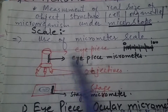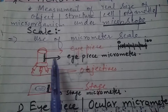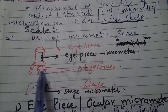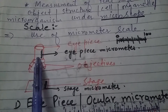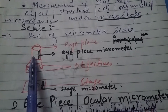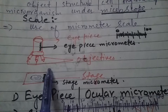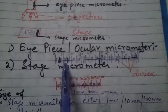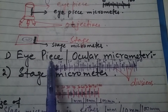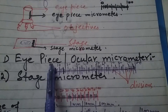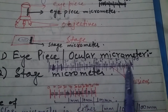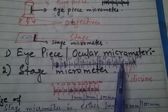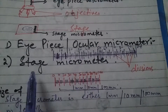Here we have shown the microscope parts: eyepiece, objective, and stage. The eyepiece has a lens, and the objective piece also has lenses. Inside the eyepiece, we have a transparent scale called the eyepiece micrometer. On the stage, we also have a scale called the stage micrometer. The eyepiece scale has divisions from zero to 100.